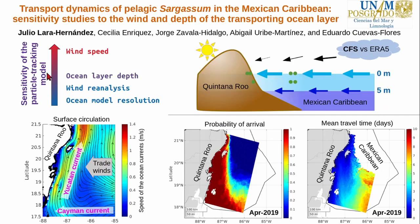Hello everybody! We analyzed the sensitivity of a sargassum tracking model to four factors: the wind speed used to move the particles, the depth of the transporting ocean layer, different wind reanalysis data, and the spatial resolution of the ocean model.